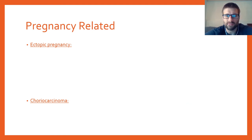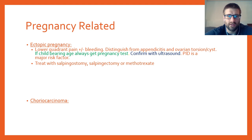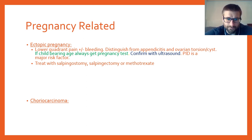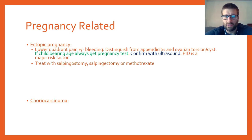Ectopic pregnancy is high yield. Presentation includes lower quadrant pain with or without bleeding, and must be distinguished from appendicitis, epididymitis (in males), and ovarian torsion/cysts. Get a beta-HCG in any patient where these diagnoses are considered. Confirm ectopic pregnancy with ultrasound. PID is an important risk factor. Treatment options include salpingostomy, salpingectomy, or methotrexate.